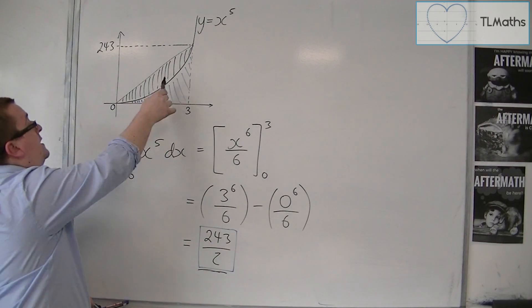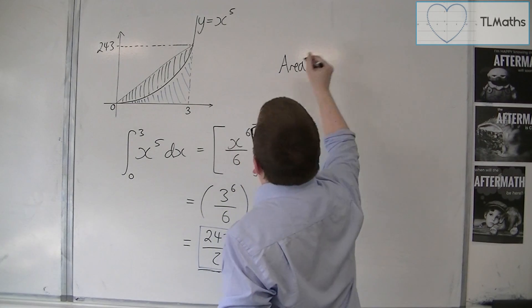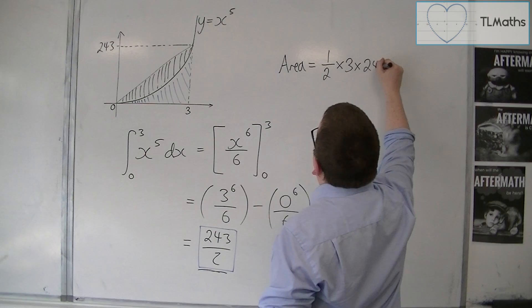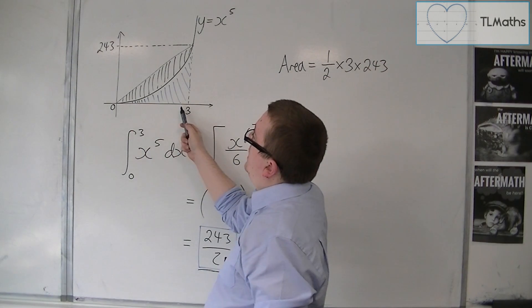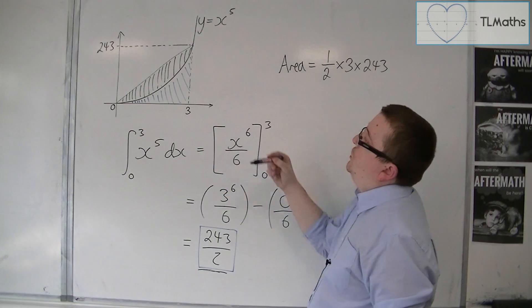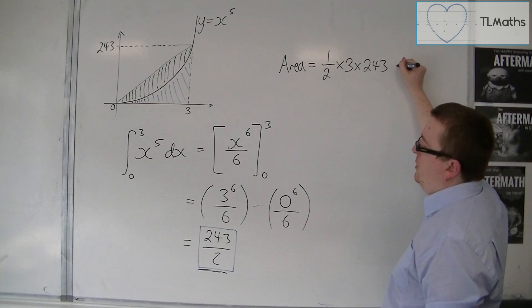So then I'm going to work out the area of that triangle. So the area I want is the area of the triangle, which is half base times height. So the base is 3, the height is 243. So half times 3 times 243. That's the area of the whole triangle.